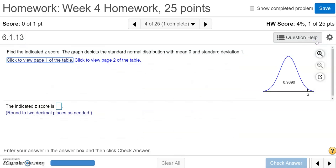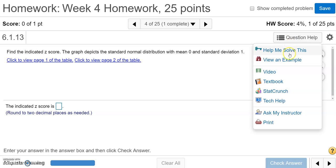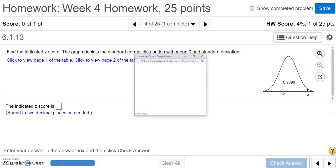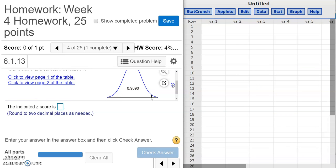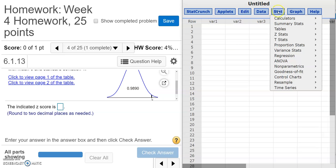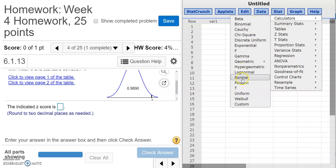Now, to use StatCrunch, we're going to go ahead and go to Question Help and click on StatCrunch to open it. So here I have my StatCrunch and my questions side by side. To do normal distribution calculations using StatCrunch, we're going to go to Stat, and then Calculators, and then Normal.